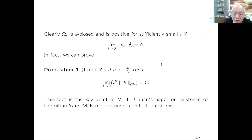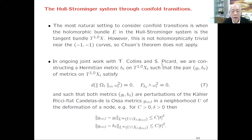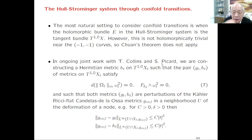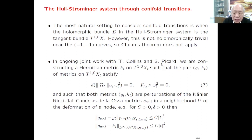We need to prove both: existence of a balanced metric, and that the Hermitian-Yang-Mills equation can be solved—and both can be done. Finally, we construct a balanced metric through the conifold transition. This gives rise to the solution of the first equation, due to Jun Li, Fu, and myself. In current joint work with Tristan Collins and Sebastian Picard, we have constructed a Hermitian metric on the tangent bundle of X_t so that the pair satisfies the full Strominger system.